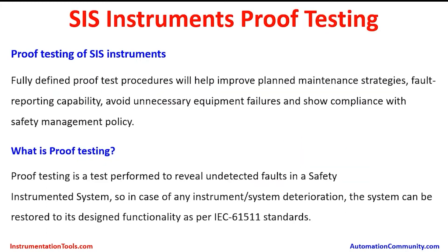Proof Testing of Safety Instrumented Systems Instruments. Fully defined proof test procedures will help improve plant maintenance strategies, fault reporting capability, avoid unnecessary equipment failures, and show compliance with the safety management policy. Each plant will have a safety management team to ensure the protection of the people working in the plant as well as the facilities available. The proof testing has to go as per the maintenance procedures and get it rated by the safety management team, which may be called the Health, Safety and Environment team, or named differently in each company.